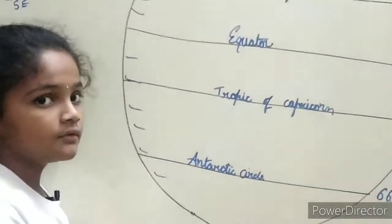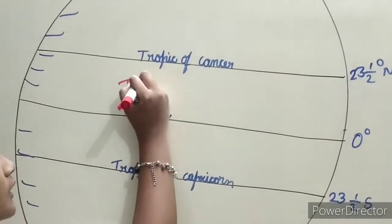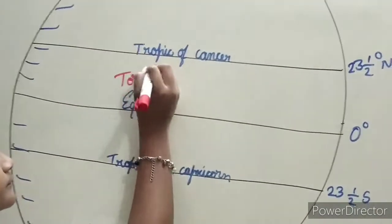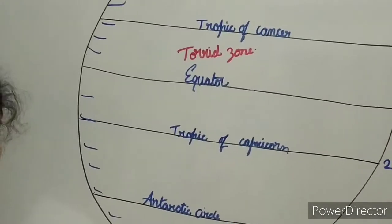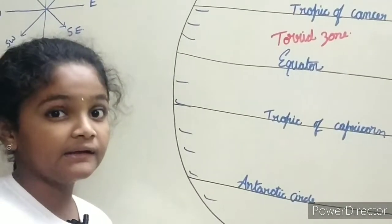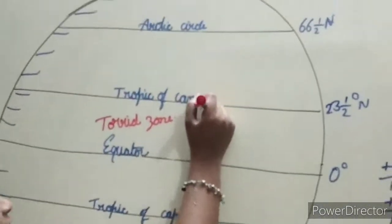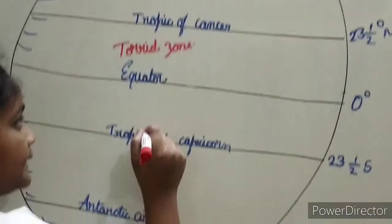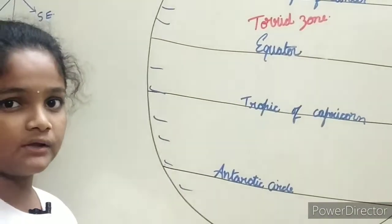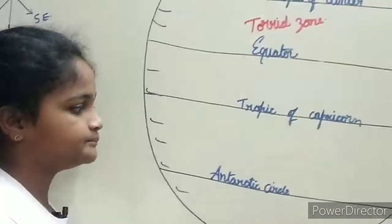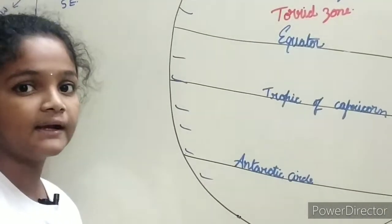Now we name some zones. From Tropic of Cancer to Tropic of Capricorn is the Torrid Zone. The Torrid Zone receives maximum heat because throughout the year sun rays fall directly in this area. From Tropic of Cancer to Arctic Circle and Tropic of Capricorn to Antarctic Circle is the Temperate Zone — neither very cold nor very hot, as sun rays fall slantly here.